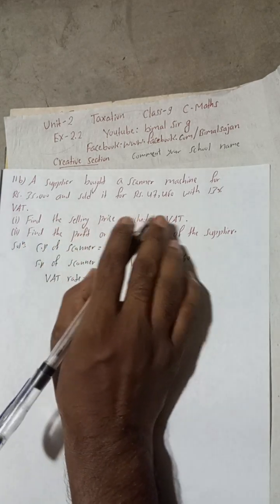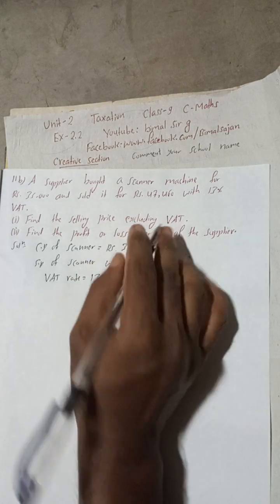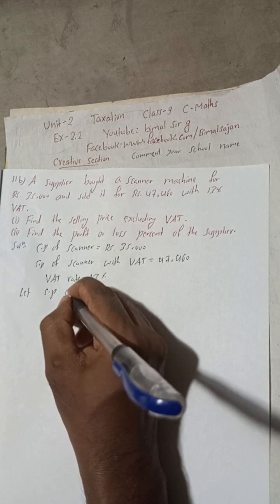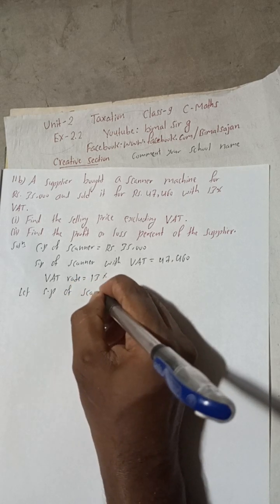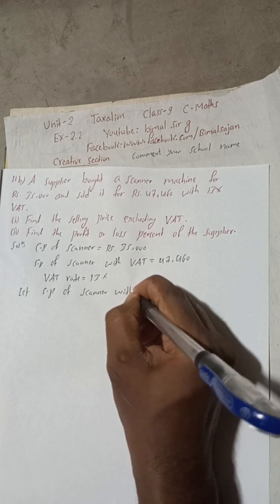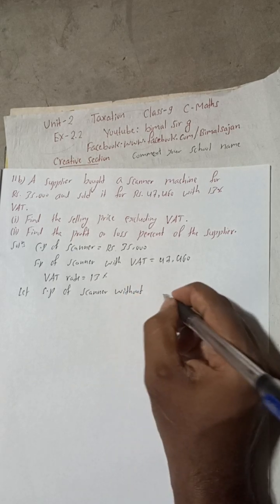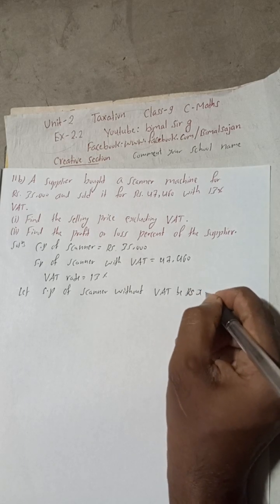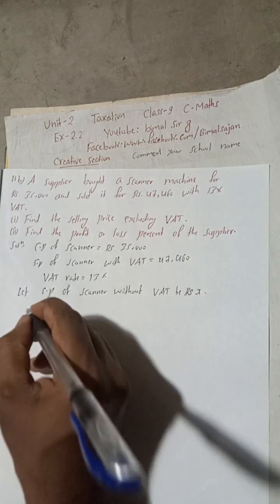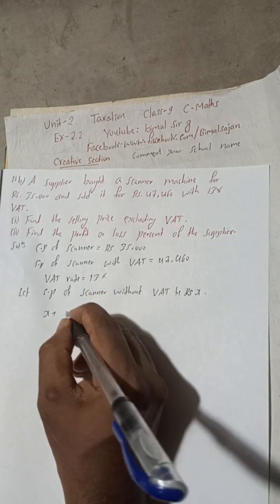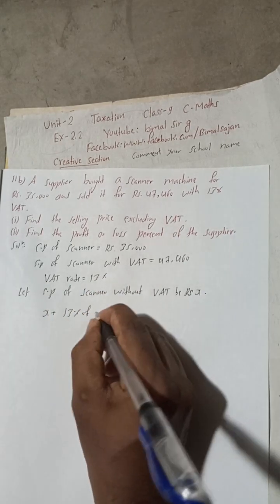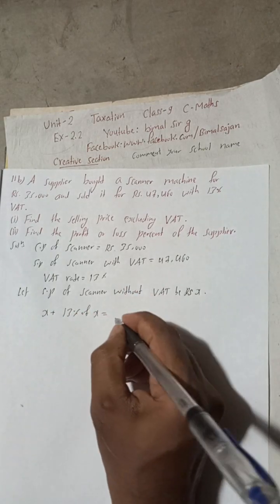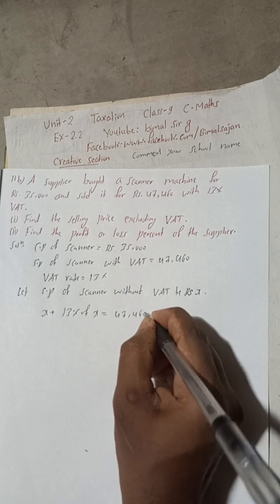So suppose this is x. Let SP of a scanner without VAT be Rs. x. That means this x plus 13%, 13% of this x will be what? Price with VAT. So this is price with VAT, this is here 47,460.